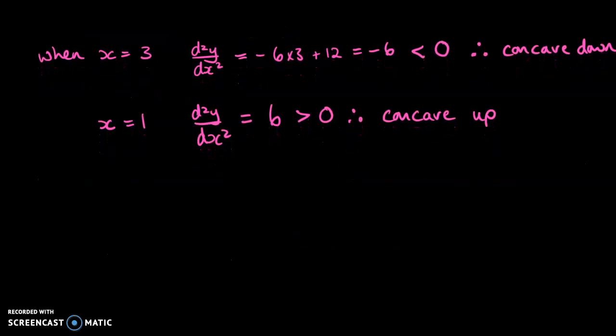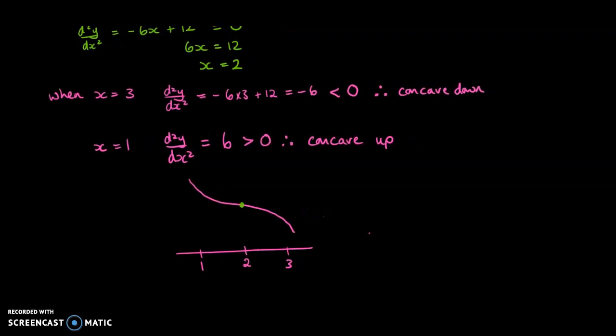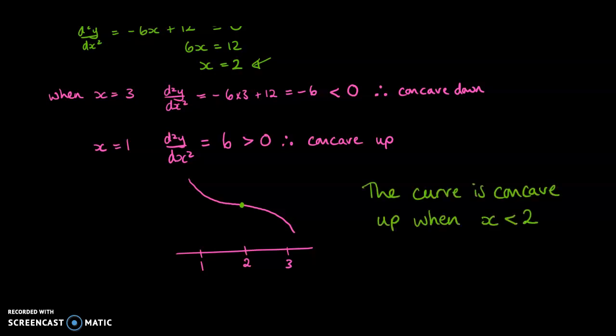If we imagine what the curve looks like: there's a change at x = 2. At x = 1 we have a concave up shape, and at x = 3 we have a concave down shape. So the point of inflection occurs at x = 2, with concave down to the right and concave up to the left. Since the question asks for the range where the curve is concave up, the answer is: the curve is concave up when x < 2. Note it's strictly less than, not less than or equal to, because at x = 2 the second derivative equals exactly zero — it's neither concave up nor concave down.